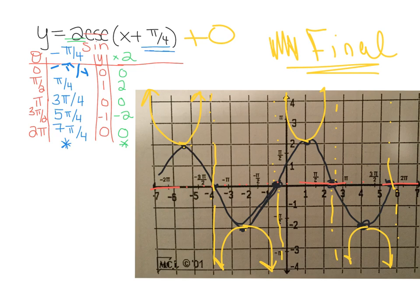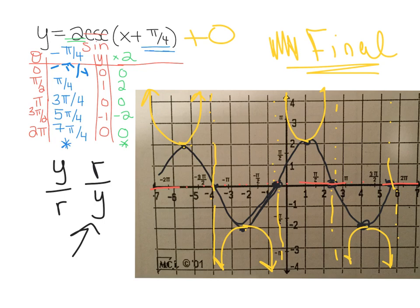Let me explain these asymptotes. Sine is defined as y/r, and since r is never 0, sine is never undefined. However, cosecant is r/y. This causes a problem because there are places where y = 0, and dividing by 0 is undefined in mathematics. On a graph, we represent undefined values with asymptotes. So everywhere y is 0, we have an asymptote. Because this graph shifted, sine used to be 0 at the origin, but the transformation moved that point left by π/4, so that's where the new asymptote is drawn.